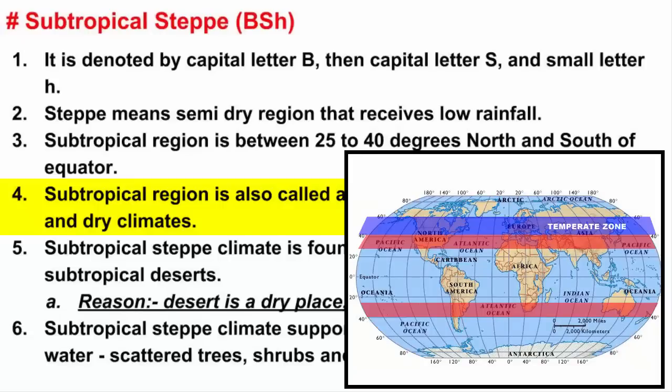To the north of the subtropical region, you will find the temperate zone. The temperature is cold in the temperate zone, and cold temperature leads to dry climates because moisture is low in cold temperatures. Similarly, to the south of the subtropical region, the tropical region exists. The tropical region receives sunlight all throughout the year, and wherever there is heat energy, the environment becomes warm. A warm environment has a good amount of moisture content in the air. This is how the subtropical region is called a transition zone between humid and dry climates.